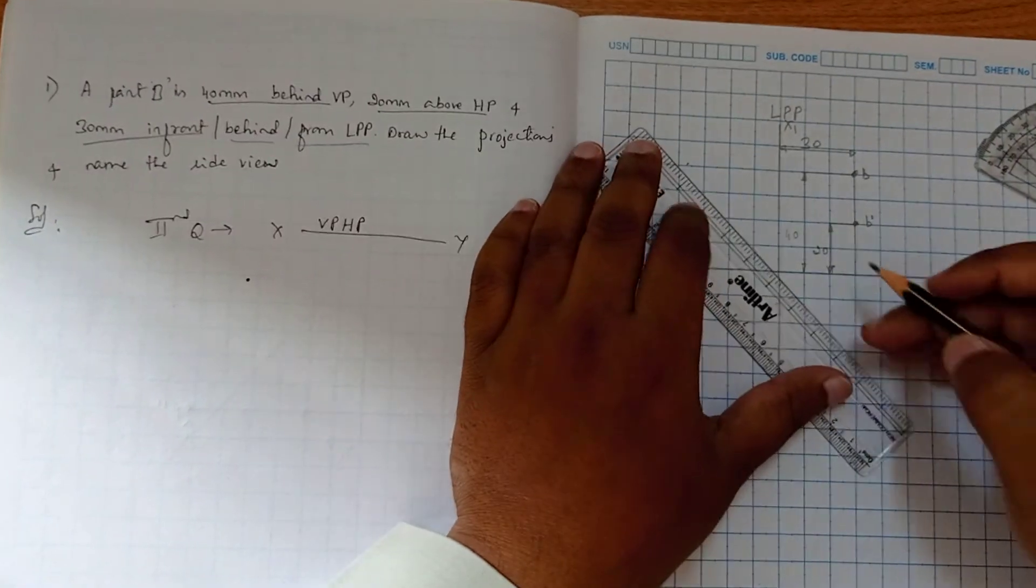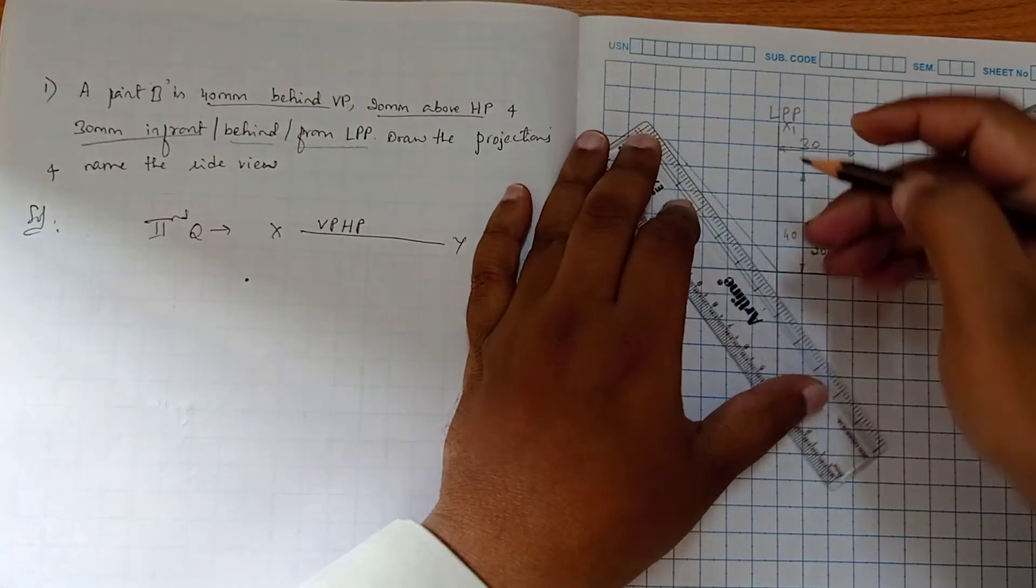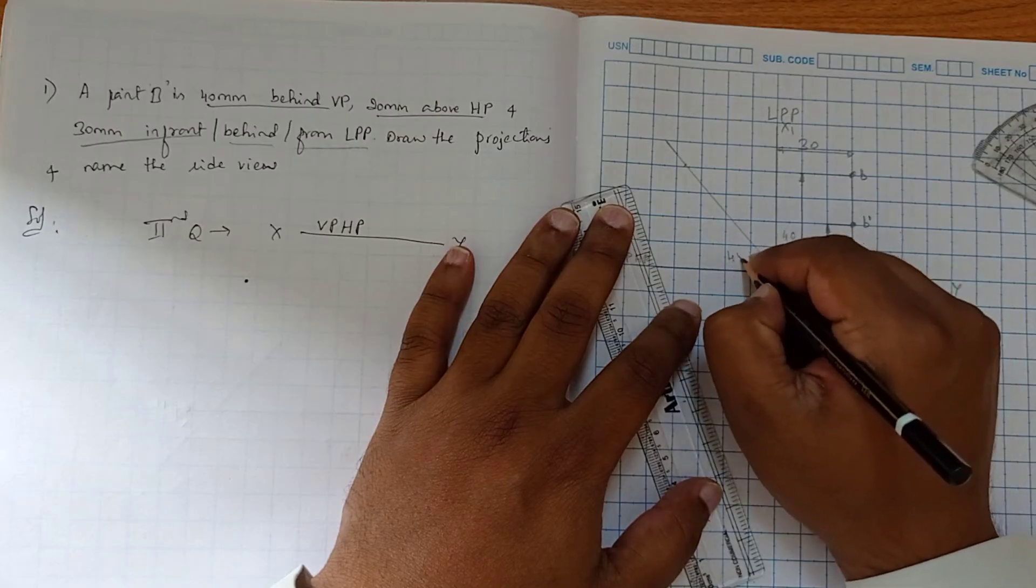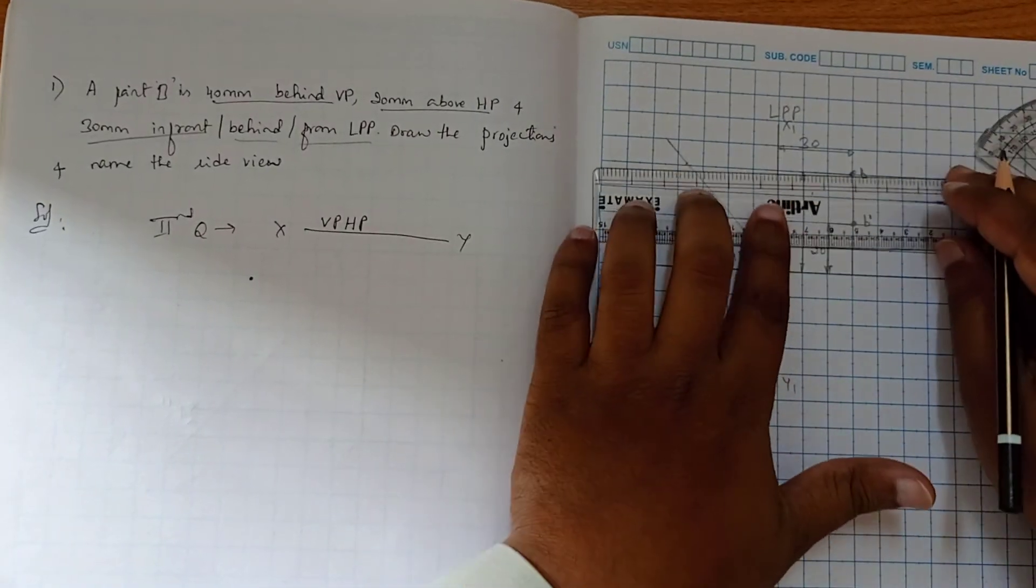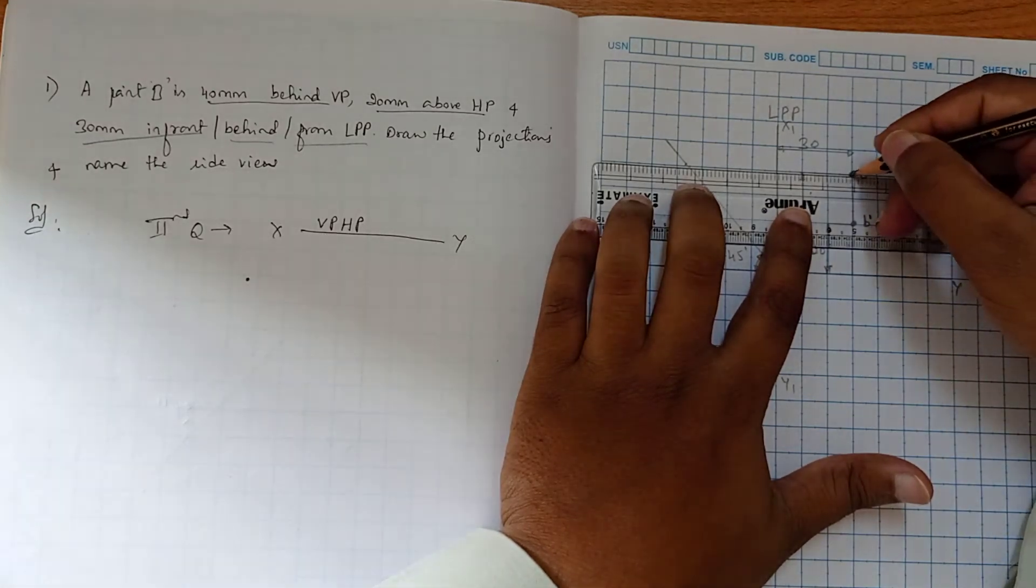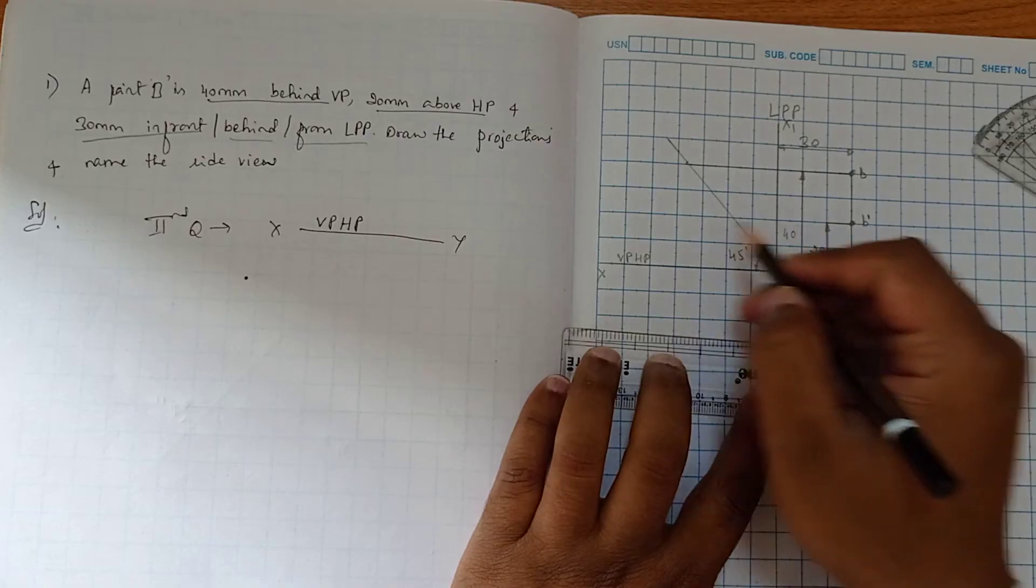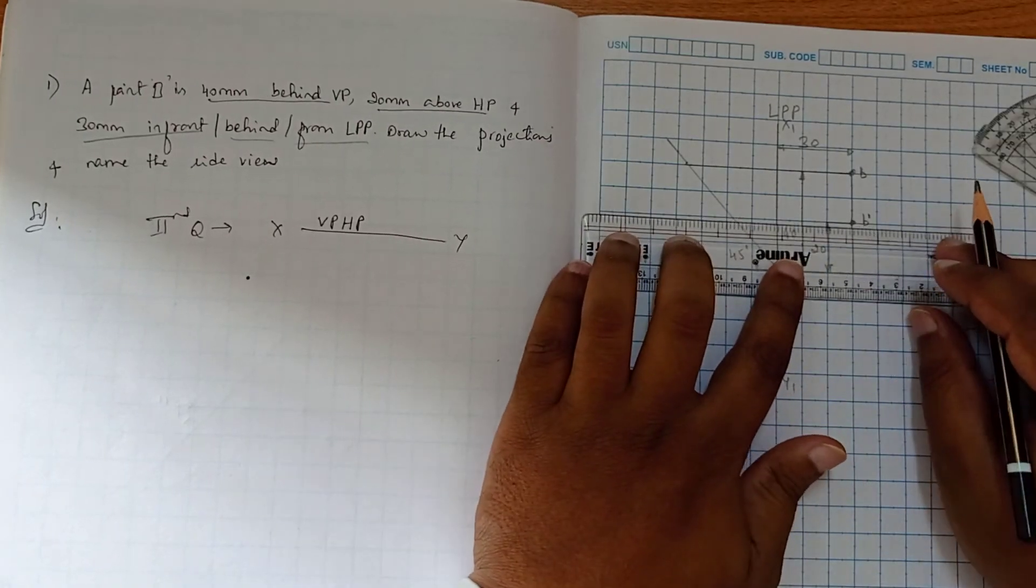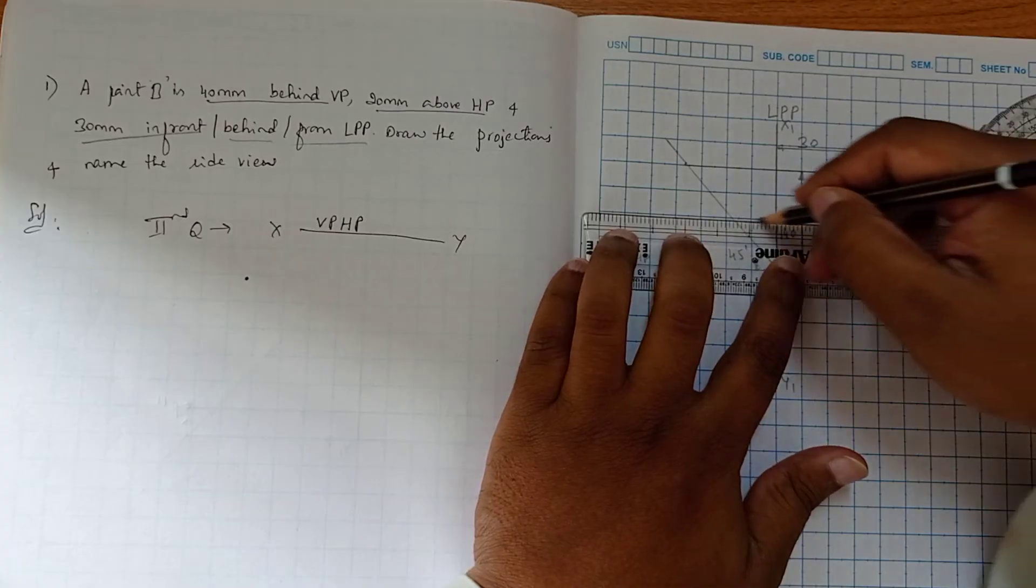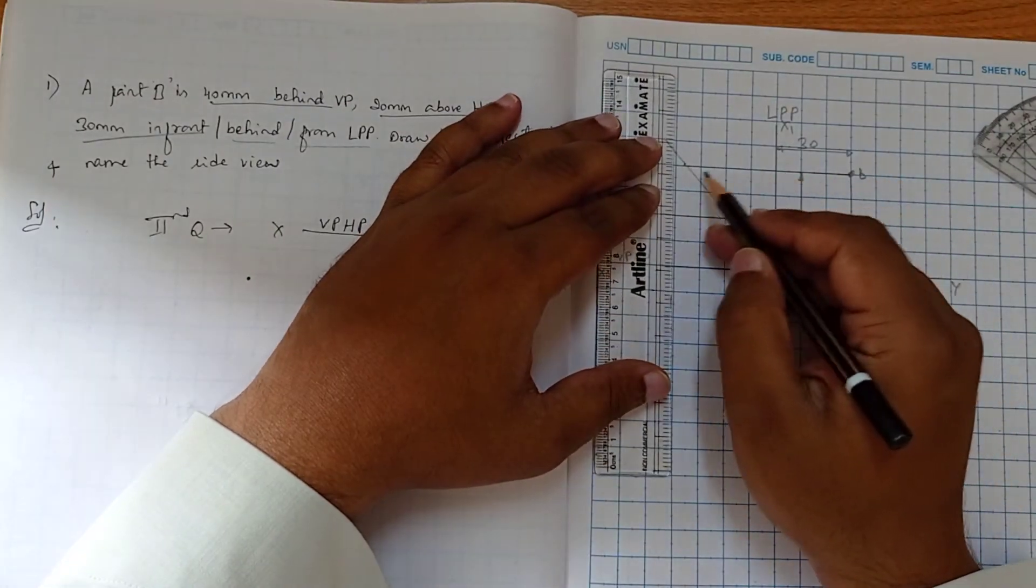Okay, so it is 45 degrees. Now from this point, I have to draw a straight line. And we know that with respect to the front view, we have the side view, so that's why drawing a straight horizontal line.